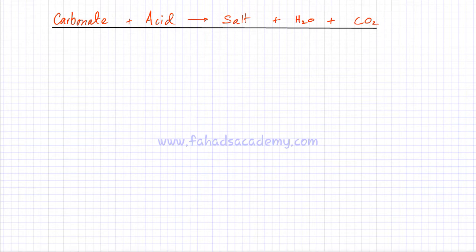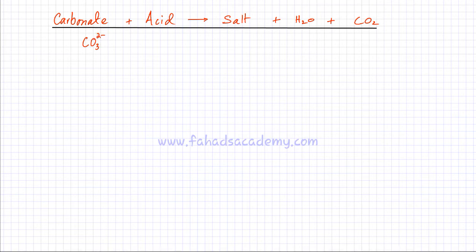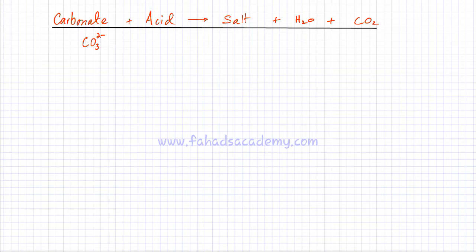Carbonates are compounds that contain carbonate ions. Carbonate ions are CO₃²⁻; they are polyatomic ions having a charge of 2−. There has to be a positive ion attached to it — it could be any positive ion. Generally, there are metal carbonates.